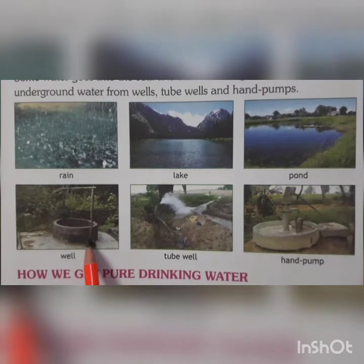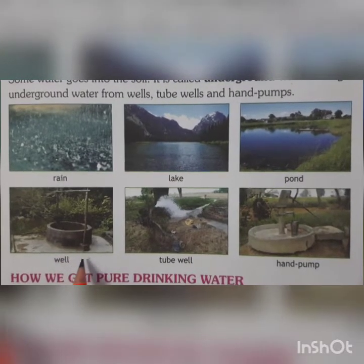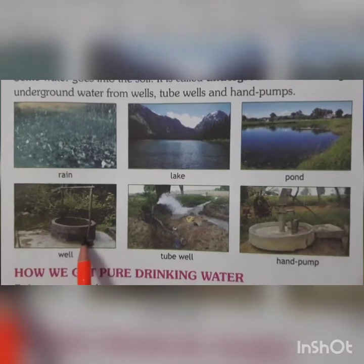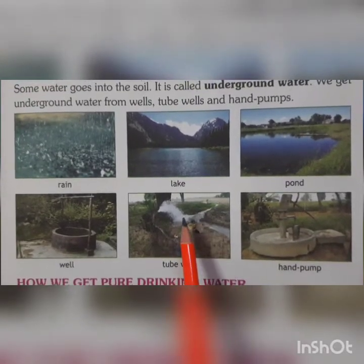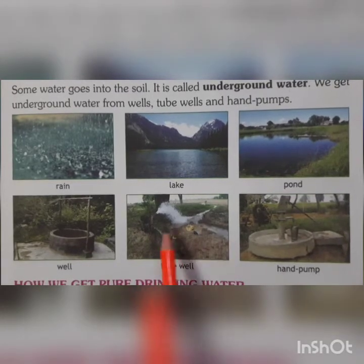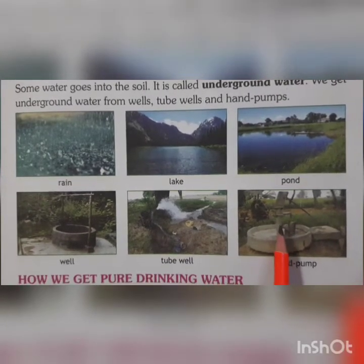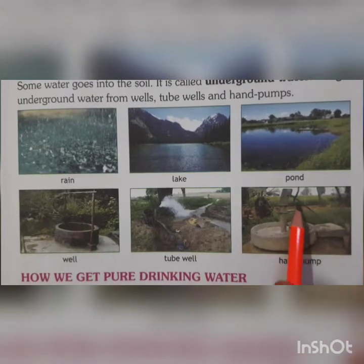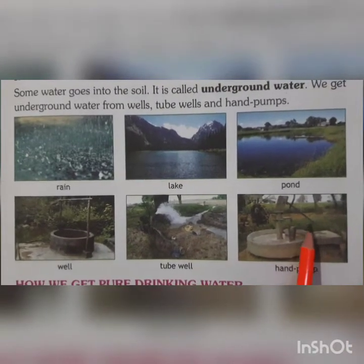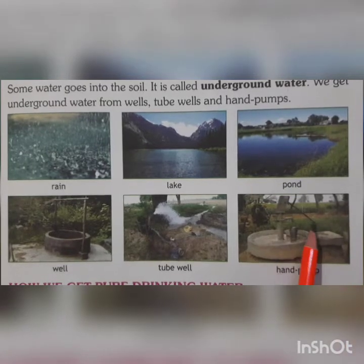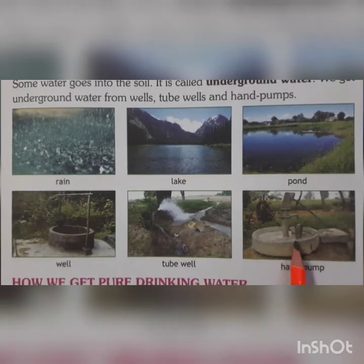Have you seen a well in villages? The water goes inside the earth and we get that water from wells. Tube wells — this is a tube well. In the village you will see tube wells; from these we also get water from underground. And hand pumps — this is the handle which you have to move up and down to get the underground water. Just move the handle up and down and you will get underground water. We get underground water from hand pumps also.